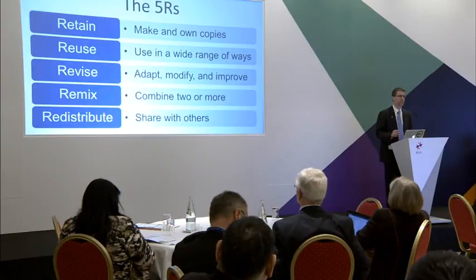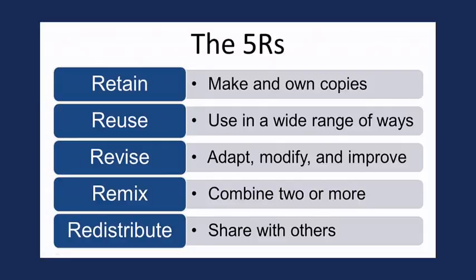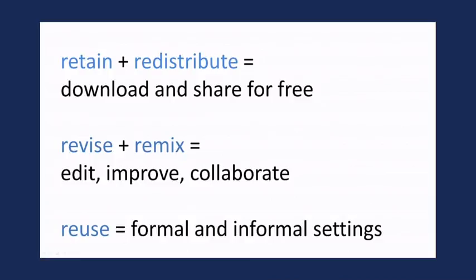The legal permissions an open license gives you are what we call the five R's. The legal rights to: retain a copy; reuse it — take somebody else's work and use it as is; revise that work — modify it to meet your needs; remix it — take two different works and mash them together into something new for your students; and redistribute that new thing you've produced. In lay terms: retain and redistribute means download and share; revise and remix means edit, improve, and collaborate; and reuse means use it in all sorts of different settings.